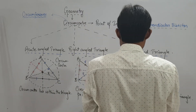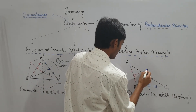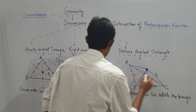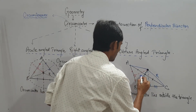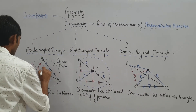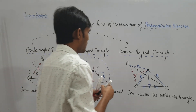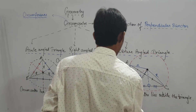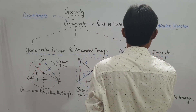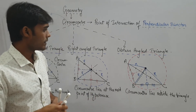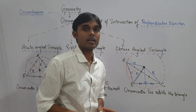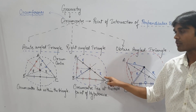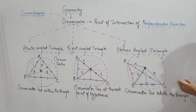If we take capital R as the circumradius and connect the circumcenter to all three vertices, each distance equals R. A circle can be drawn accordingly. So to conclude: in an acute angled triangle, the circumcenter lies within the triangle; in a right angled triangle, it lies at the midpoint of the hypotenuse; and in an obtuse angled triangle, it always lies outside the triangle.